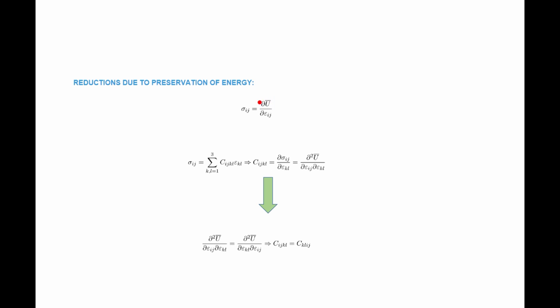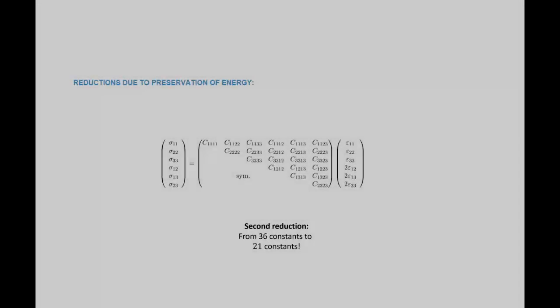Because of the existence of this energy function, independent of the path, we can show that the matrix relationship between the stress and the strain has to be symmetric. The component C_ijkl is equal to the partial derivative of sigma_ij with respect to epsilon_kl, which is equal to the second derivative of the energy with respect to epsilon_ij and epsilon_kl. Knowing that mixed second derivatives are equal, this implies that C_ijkl equals C_klij.